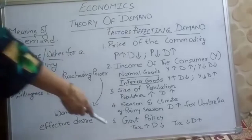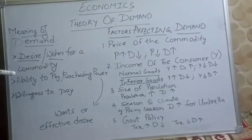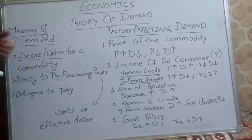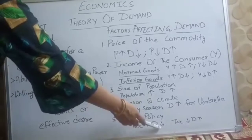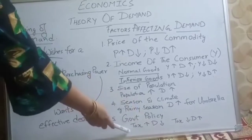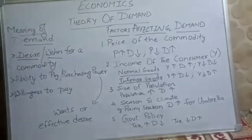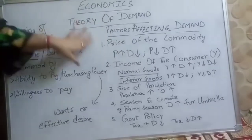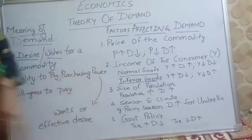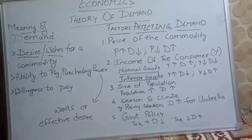The last point is government policies. If tax increases, the price of goods increases, which leads to demand decreasing. If the government changes the tax policy, our demand is also affected. These are the five points which cover the factors affecting demand.